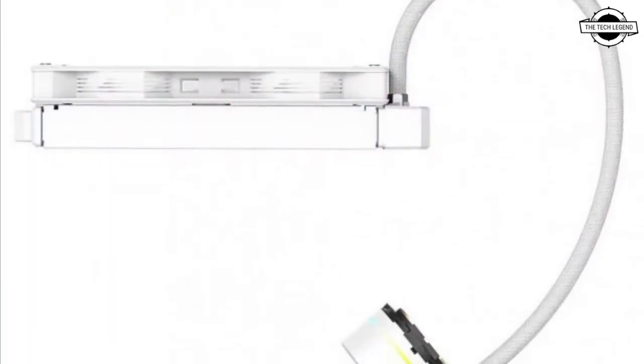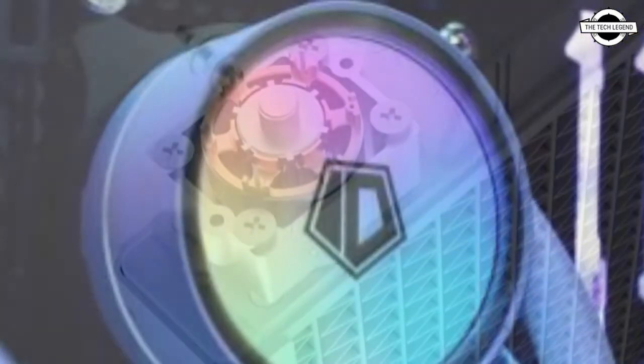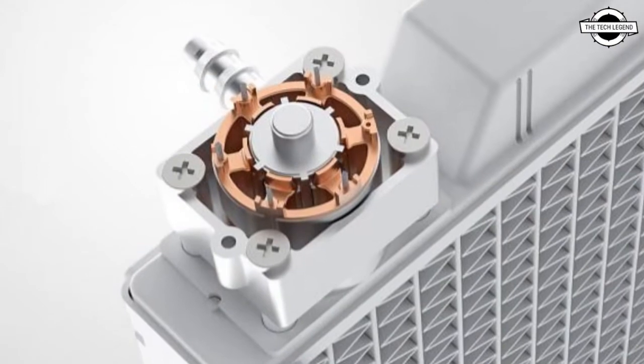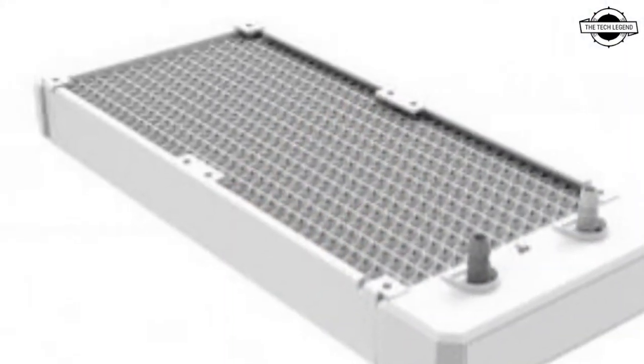ID Cooling announced the white all-in-one water cooling unit ICE Flow 240 ARGB Snow. It utilizes a 240 mm integrated fan, two fans in one unit. It uses an integrated fan then connects two 120 mm fans.